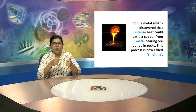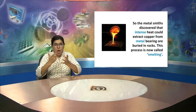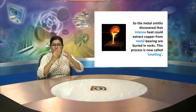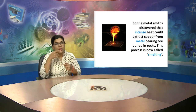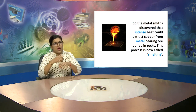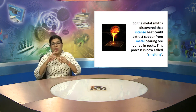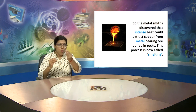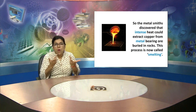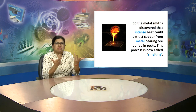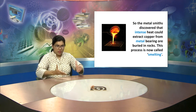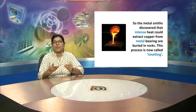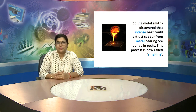Metalsmiths — people who made things from metal — discovered that intense heat could extract copper from metal-bearing ores buried in rocks. The process of melting rocks containing metal and then separating the metal into another cast or mold was known as smelting. This was now discovered and used more widely.